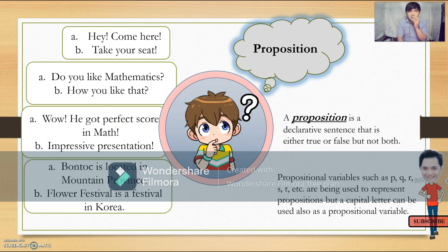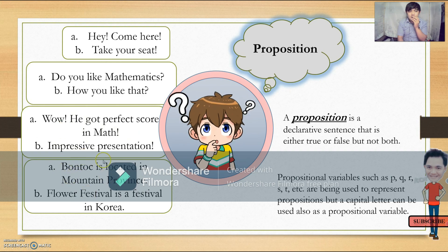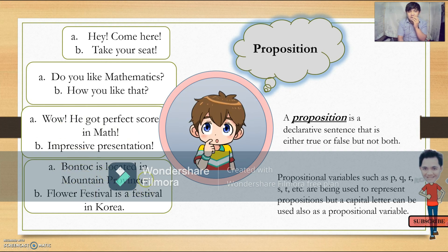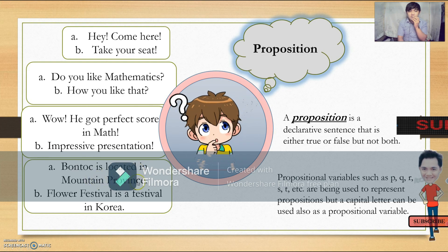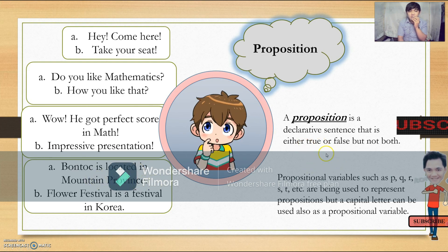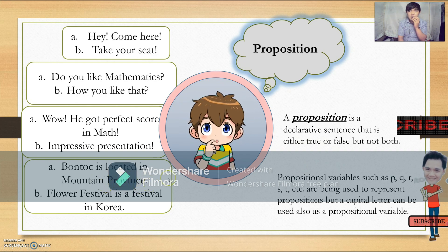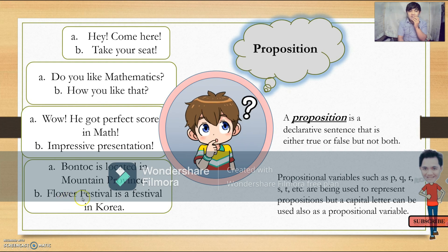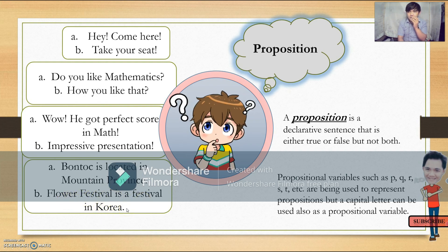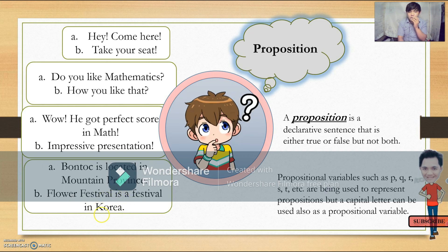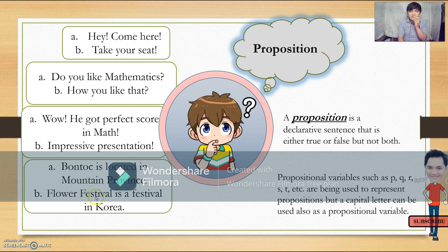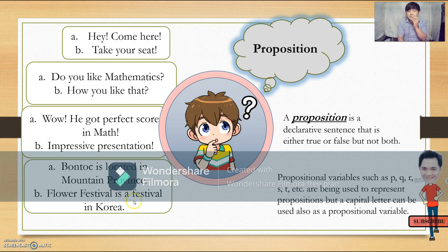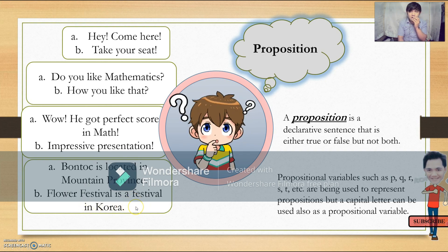Next: "Bontoc is located in Mountain Province." Is this a declarative sentence? Yes, it is a declarative sentence because it is a statement that ends with a period, so it is a proposition. "Flower Festival is a festival in Korea" — this is a false proposition because the Flower Festival is not a festival in Korea. It is a festival in the Philippines, particularly in Baguio City.